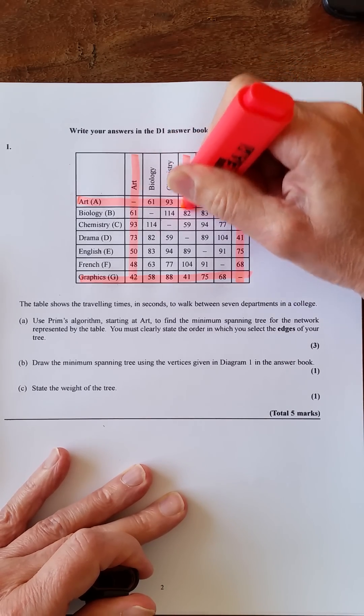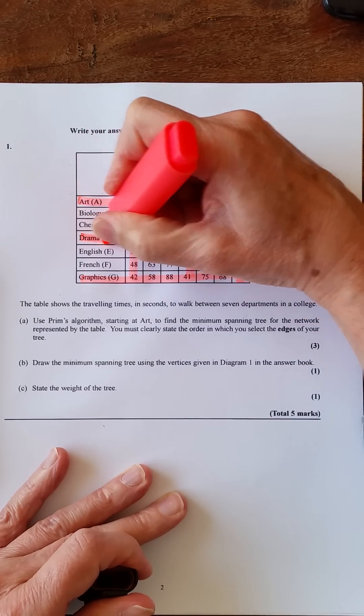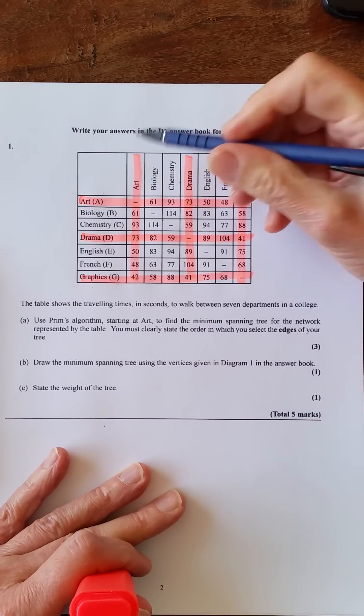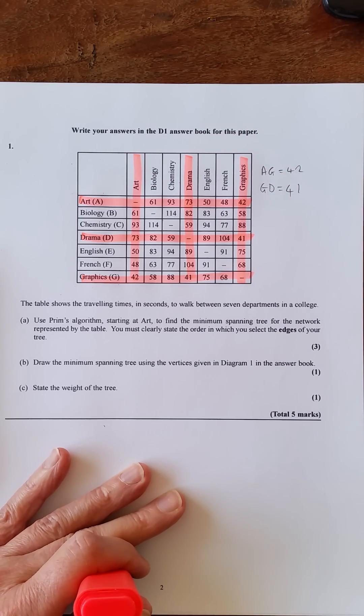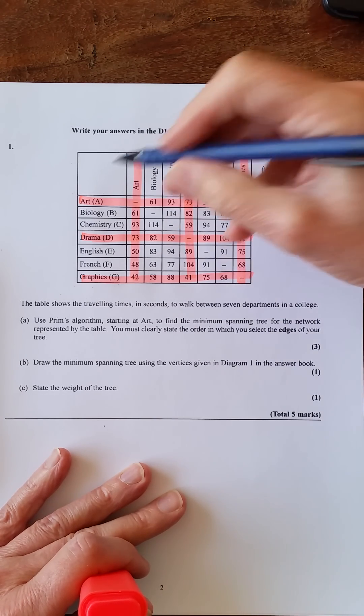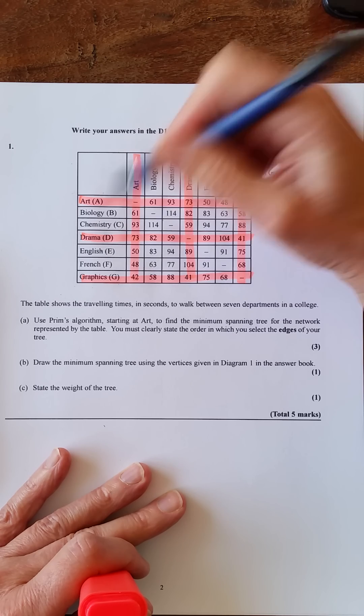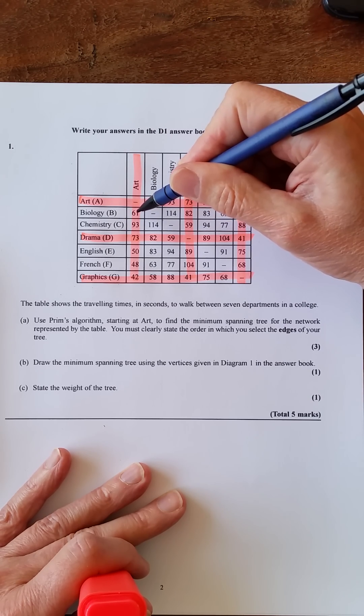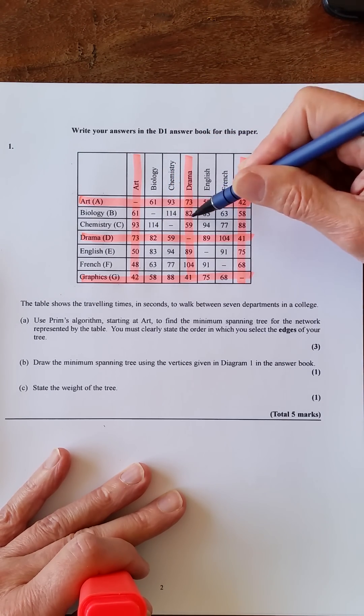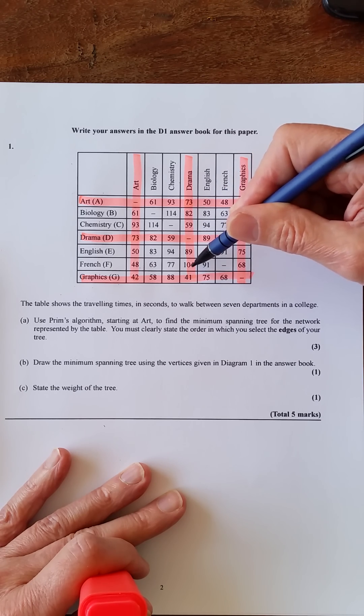So what we'll do is we'll highlight D and we'll cross out D, so we're not looking down there anymore. So now what we're doing is we're looking down A, D, and G for all of the subjects that we've not chosen, so I'll look at B, C, A, and F.